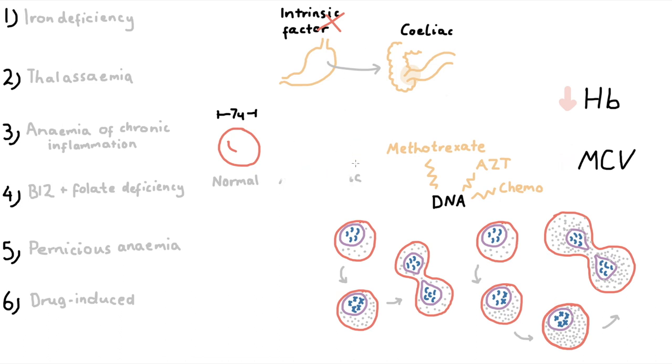If the MCV is normal but we still have anemia, then we have what we call normocytic anemia. The most common cause of this is blood loss.